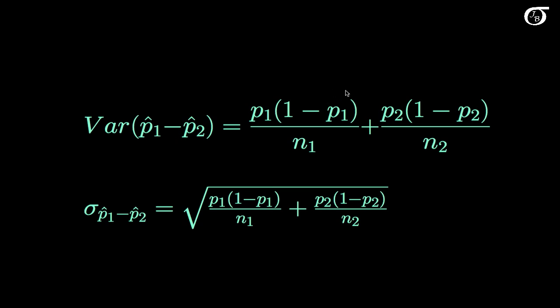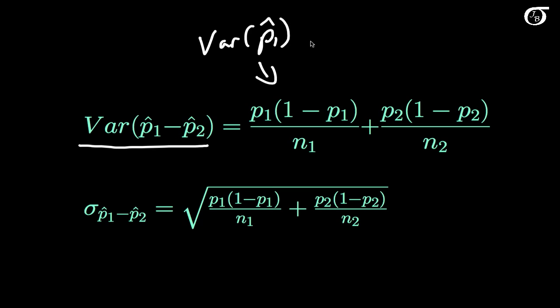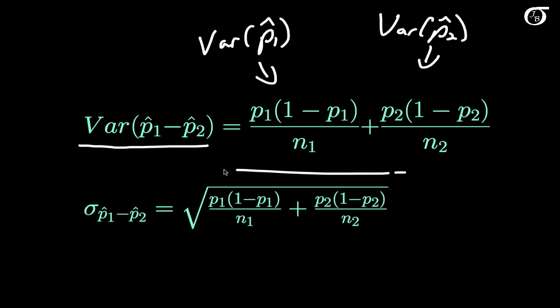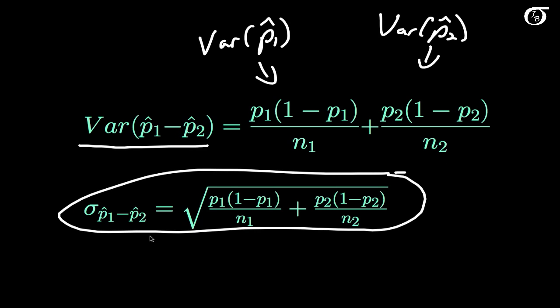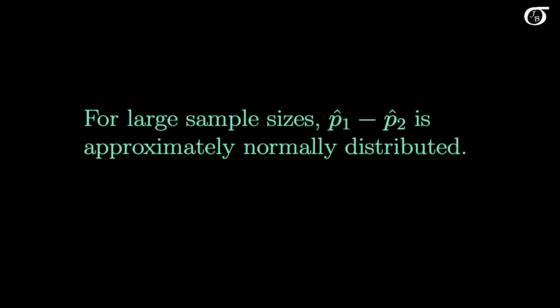Its variance is given by the sampling distribution of p̂₁ minus p̂₂. The first part is the variance of p̂₁, and the second part is the variance of p̂₂. If they are independent samples, we can simply add those two together. We take the square root of the variance formula to get the standard deviation — the standard deviation of the difference in sample proportions. Also, for large sample sizes the difference in sample proportions is approximately normally distributed, so we'll be able to use our regular techniques.